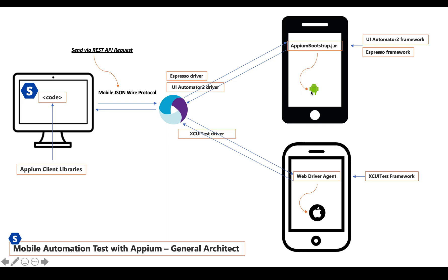The Appium bootstrap tries to control the target application. This is the whole picture: we send something to the server, the Appium server gets the correct driver, that driver communicates with Appium bootstrap, and the bootstrap uses the correct framework to translate the request and control the application. After getting the response from the command, it responds back to the Appium server, which responds back to our client code, and we can see the result.